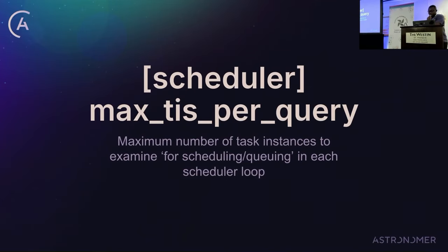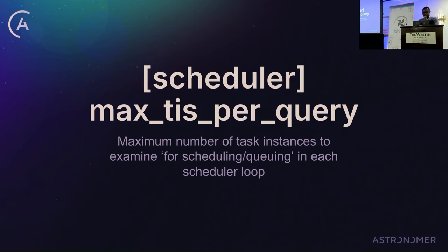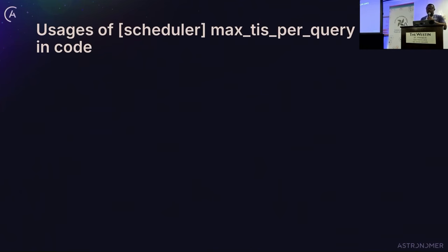There is another option called max IP query (max active tasks queried per scheduler loop), which is the number of task instances the scheduler can examine for scheduling or queuing in each loop. At every loop, it will get this maximum number of task instances and check whether to schedule or queue them to the executor.